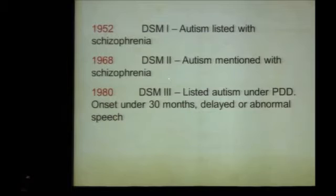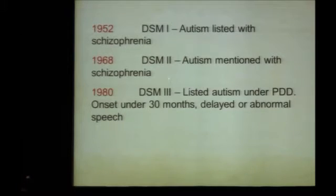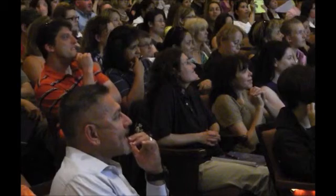In 1952, autism was listed in the DSM with schizophrenia. In 1968, they kind of mentioned autism. Things didn't get really formalized until 1980 in the DSM-III. You might wonder what DSM stands for — Diagnostic and Statistical Manual. I don't know how the statistics got in there.